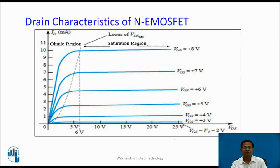These are the drain characteristics of N-channel E-MOSFET. The characteristics operate in three different regions: cut-off region, ohmic region, and saturation region. In the cut-off region, VGS is less than VT and current remains zero. In the ohmic region, current is directly proportional to voltage — to use the MOSFET as a closed switch, it must operate here. In the saturation region, channel width is minimum and current remains constant — for amplification, the MOSFET must operate in this region.